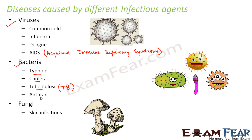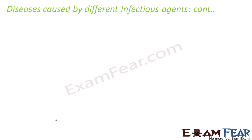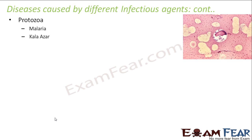Fungi are responsible mostly for skin infections. Many different kinds of infections or allergies on the skin can happen because of fungi. Then there is protozoa, which is responsible for malaria and kala-azar. Kala-azar is also known as black fever. In both malaria and kala-azar, you get high fever with a lot of shivering - people suffering from malaria often shiver a lot when their body temperature goes high.